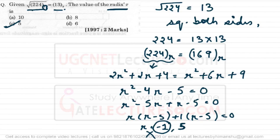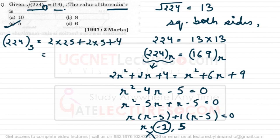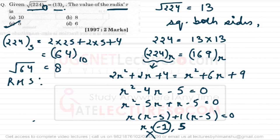We can verify by converting both numbers into decimal. 224 base 5 = 2×25 + 2×5 + 4 = 64 in base 10, and √64 = 8. On the RHS, 13 base 5 = 5 + 3 = 8. Both sides equal 8, confirming our answer is correct.